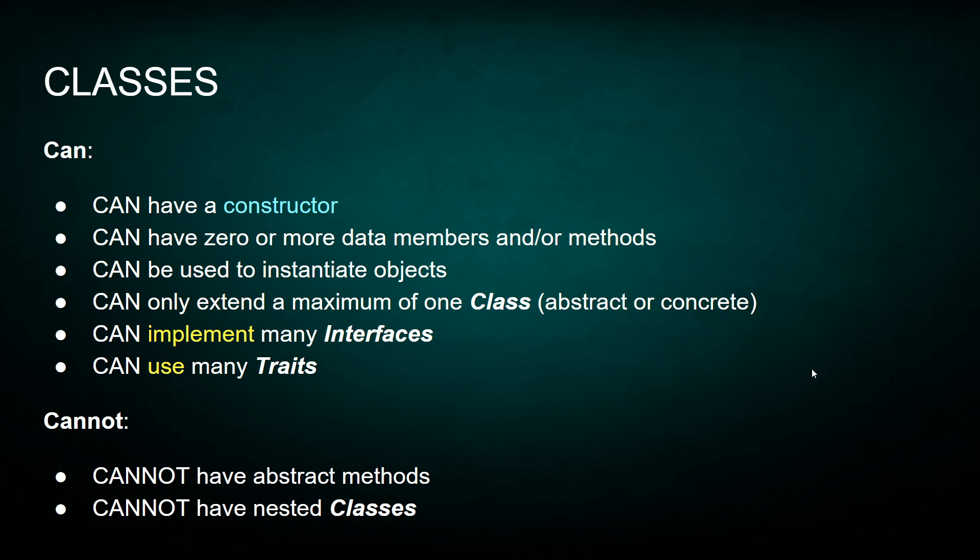A class can implement as many interfaces as it wants — there's no limit to that. The same rules for traits: you can use as many traits as you want. But a class cannot have abstract methods, which makes sense when you talk about abstract classes later on. And it cannot have nested classes, with the exception of an anonymous class, but usually you cannot have nested classes in PHP.